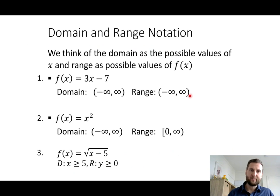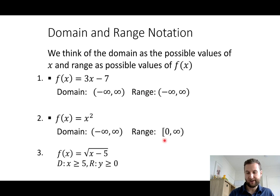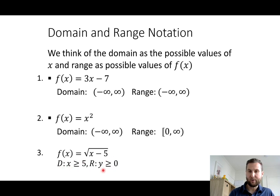For notation, there are basically two ways to write down domain and range. The first uses round and square brackets in interval notation. The second uses inequalities — greater than or less than — for the domain and range, which we saw in the last example.